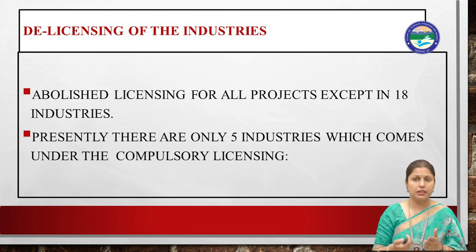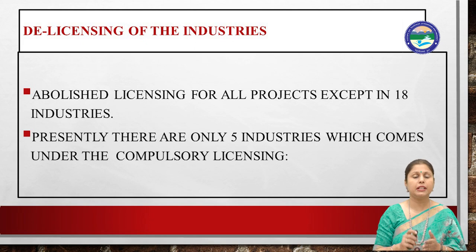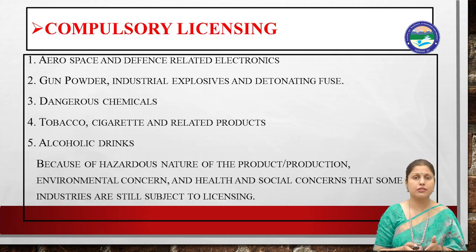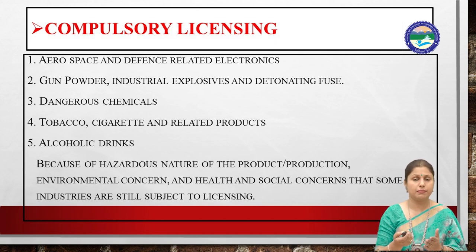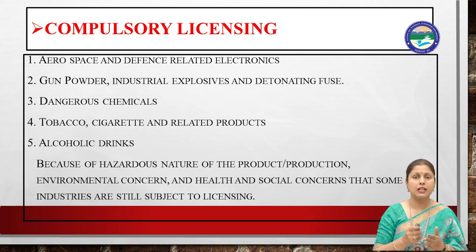Delicensing of industries followed. When the system was delicensed, initially 18 industries were kept under compulsory licensing. The rest of the industries were delicensed. Over time, only 5 industries now remain under compulsory licensing: aerospace and defense-related electronics, gunpowder and industrial explosives and detonating fuse, dangerous chemicals, tobacco and cigarettes and related products, and alcoholic drinks. Because of the hazardous nature of these products, environmental concerns, and health and social concerns, these 5 industries are still subject to licensing. All other industries were delicensed under the 1991 policy.